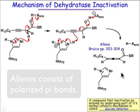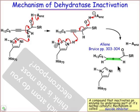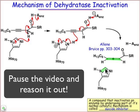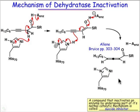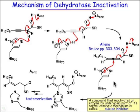What happens next is that we have a very good electrophile in the substrate, and that electrophile is going to capture the nucleophilic histidine imidazole ring. That substrate turns around and serves as an electrophile to covalently capture that imidazole, as shown here with a carbon-nitrogen bond.